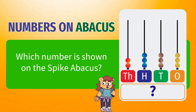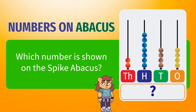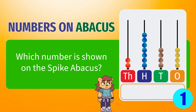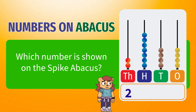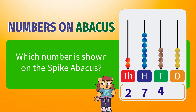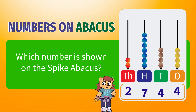What number is shown on the spike abacus? Two thousandths, seven hundredths, four tens, four ones. The number is 2744.